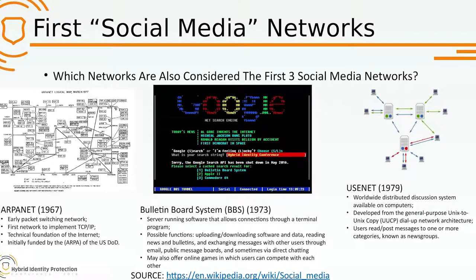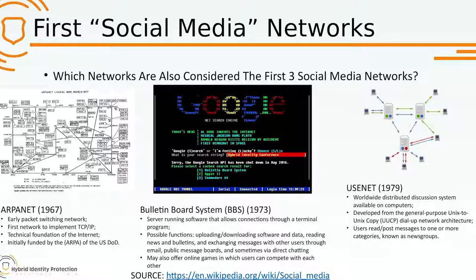As you can see over here, Google was available in the old style, but they canceled the API in May 2016. I tried to look it up - hybrid identity conference - but it wasn't available anymore. And there's the last one: Usenet. These are the first three that are considered social media networks.